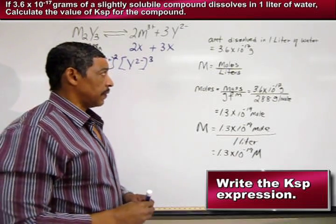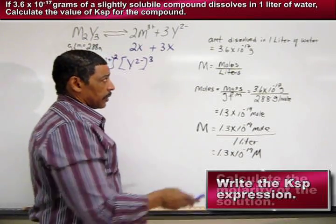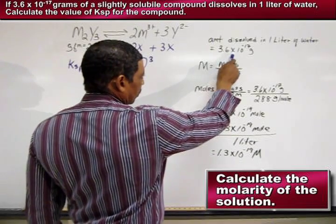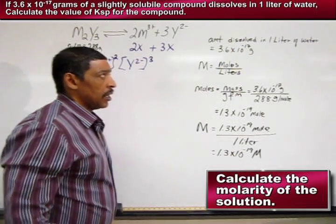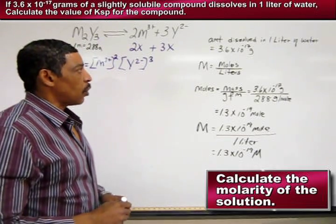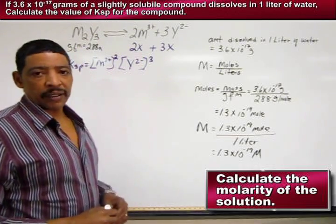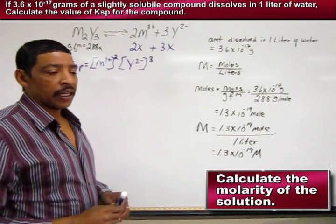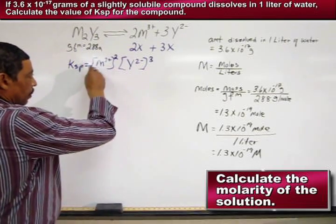However, in the practice problem, we're only given grams, specifically 3.6 times 10 to the -17 grams of the compound actually dissolves. So we must now calculate moles and then molarity in order to generate the proper concentrations.